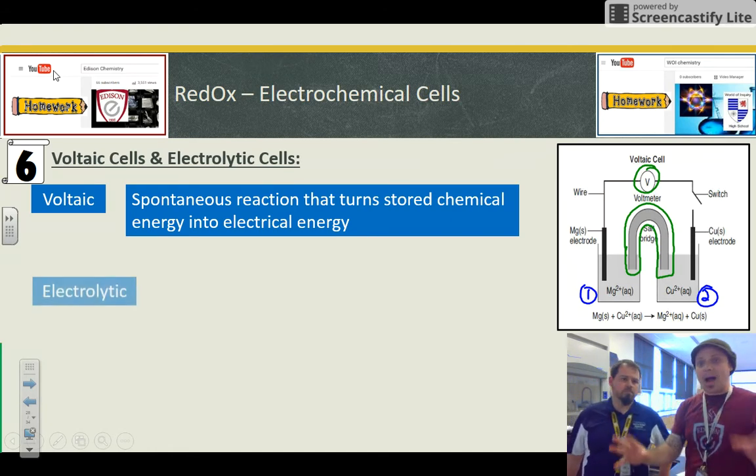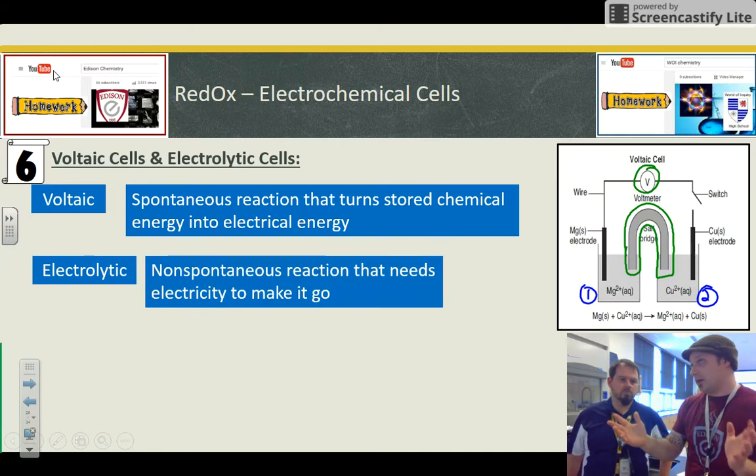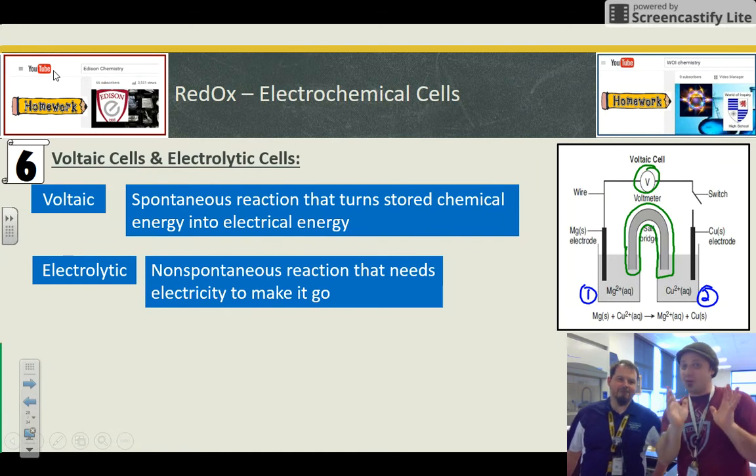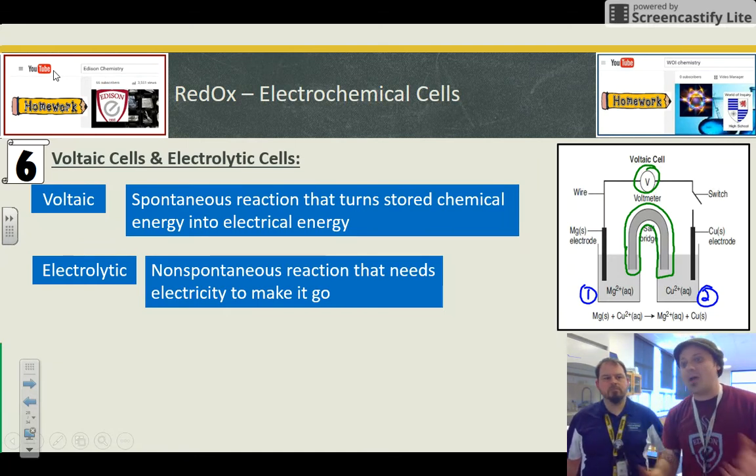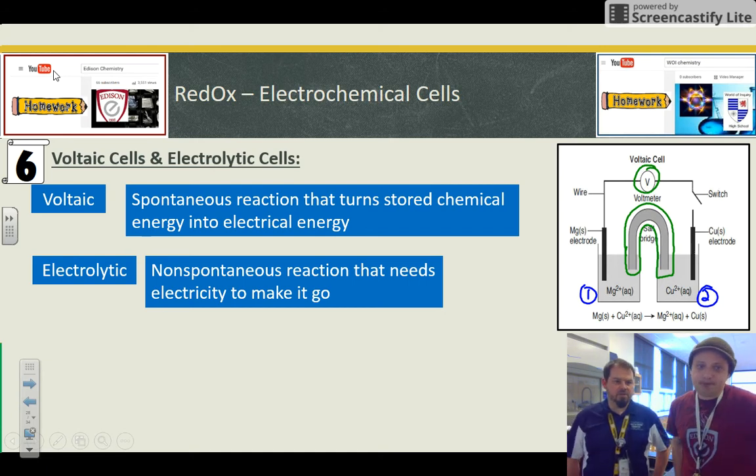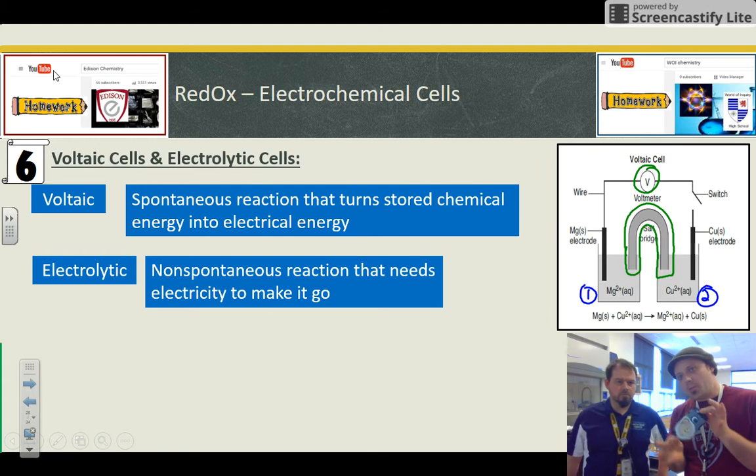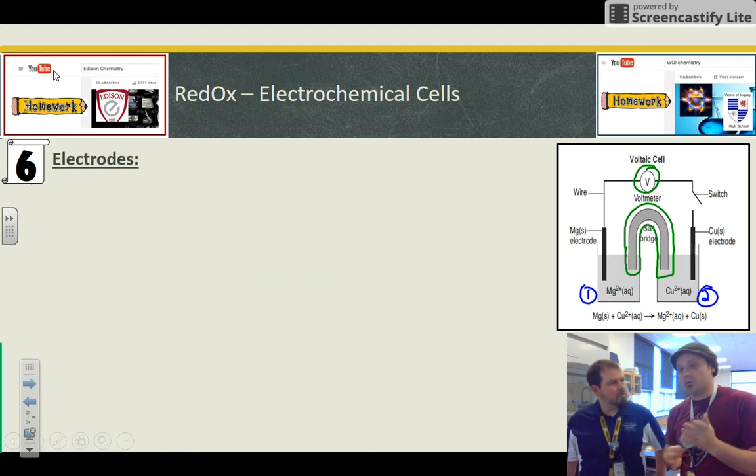But this lecture is mostly about all the different parts of a working voltaic cell, and the chemical reactions that we're going to have to interpret out of it. Now, conversely, the electrolytic cell is the non-spontaneous reaction that needs the electricity to make it go. We will highlight that cell next video in detail. It's like when you switch your battery into recharge mode.